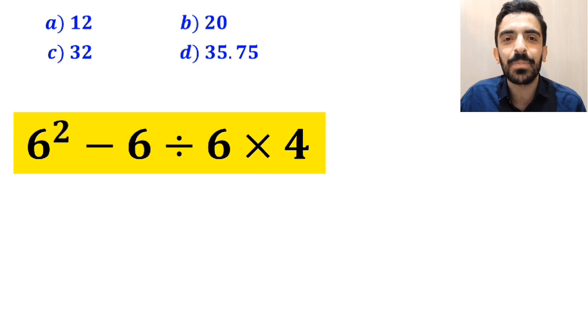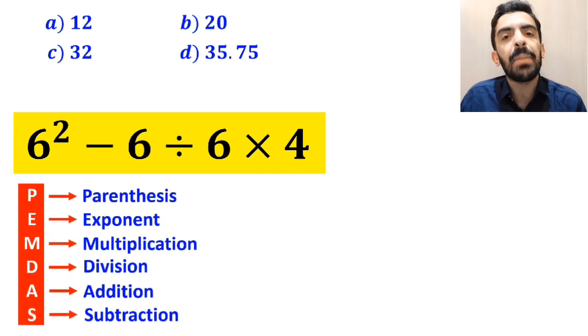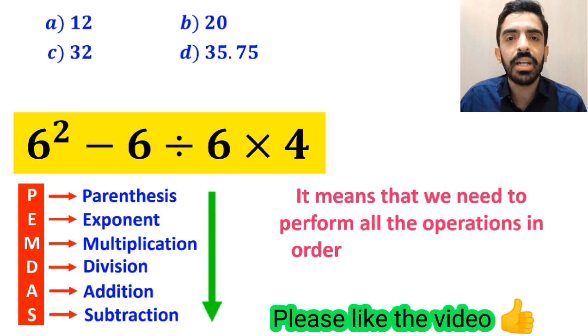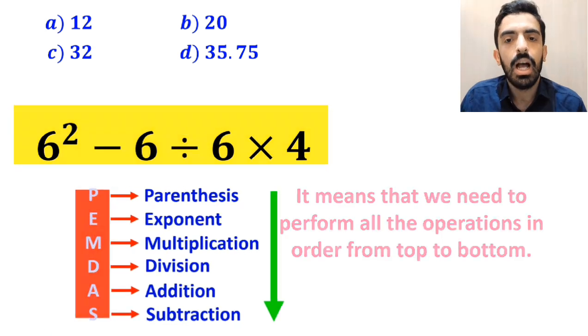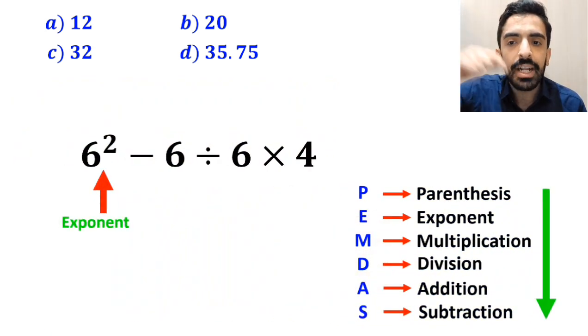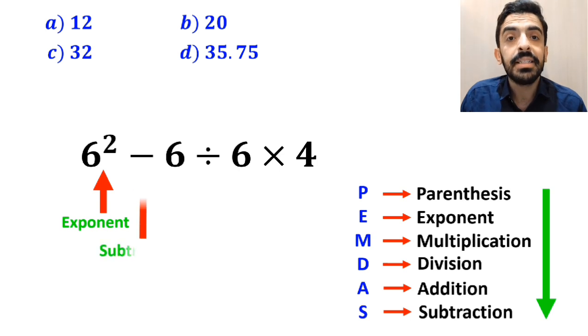Now let me show you how to solve this expression properly. To solve this problem, we must follow the PEMDAS rule. It means we need to perform all the operations in order from top to bottom. In this expression, first we have an exponent, then a subtraction sign, followed by a division, and finally a multiplication.